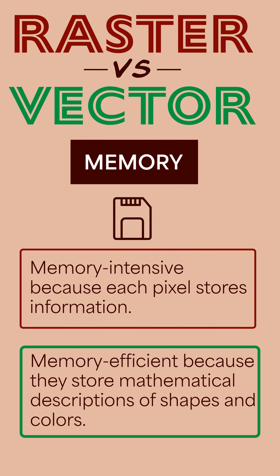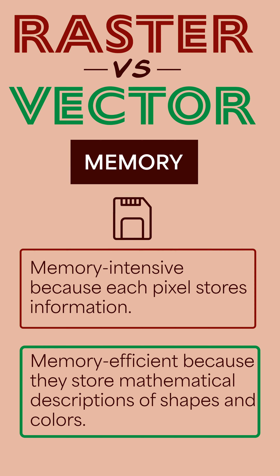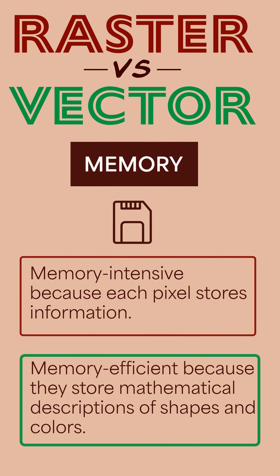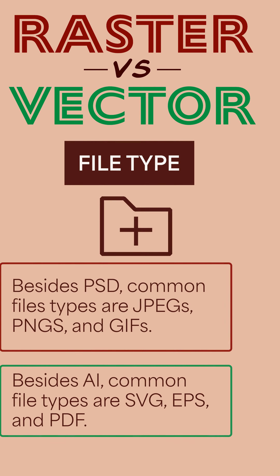Raster files are memory intensive, so they are bigger in file size because each pixel stores information. Compared to vector files, which are memory efficient because they store mathematical descriptions of shapes and colors.